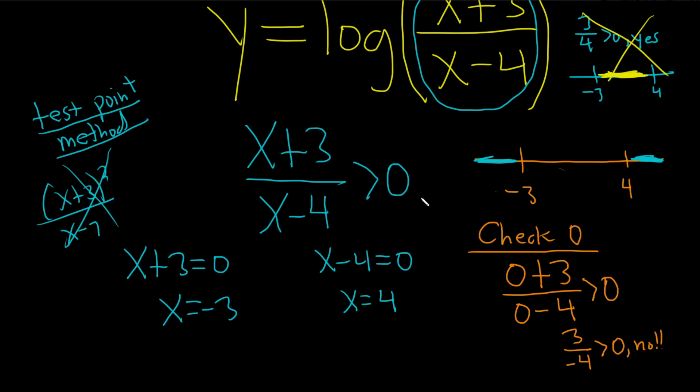So the answer from the picture, we're going to use parentheses because it's a strict inequality. You'll find you're always using parentheses in these because the log is always going to give you a greater than symbol. It would be negative infinity to negative 3, union, and then you want to do 4 to infinity. And that would be the domain of this logarithmic function.